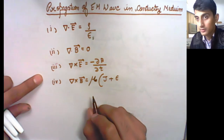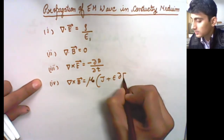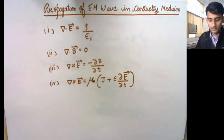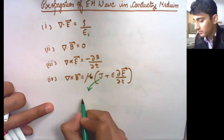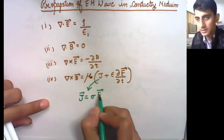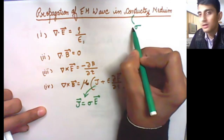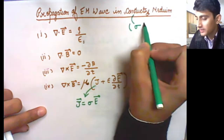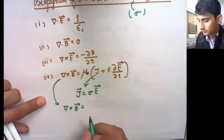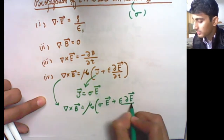We should use mu instead of mu naught since it is the permeability of the medium itself. Using Ohm's law in microscopic form, J equals sigma times E, where sigma is the conductivity of the conducting medium. The modified fourth Maxwell equation becomes: del cross B equals mu sigma E plus epsilon del E by del T.